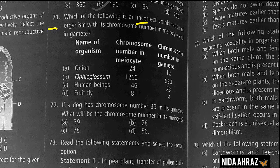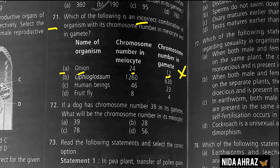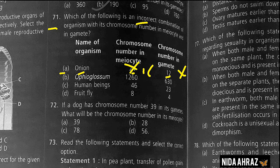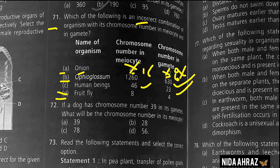Which is an incorrect combination of organism with chromosome number in meiocyte and gametes? Option A: onion — meiocytes 24, gametes 12 — is incorrect because the chromosome number 2n of onion is 16, not 24, and gametes should be 8 not 12. Ophioglossum 1260/630, human beings 46/23, and fruit fly 8/4 are all correct. Option A is the incorrect match and therefore the correct choice.